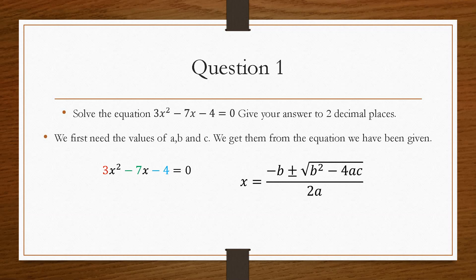So this is our equation. I've highlighted the number 3, the minus 7 and the minus 4. Very important that you take into account the sign of these numbers. So the value of A is 3, the value of B is minus 7 and the value of C is minus 4.